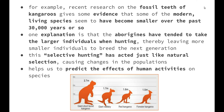For example, recent research on the fossil teeth of kangaroos gives some evidence that some modern living species seem to have become smaller over the past 30,000 years or so. One explanation is that the aborigines tended to take the larger individuals when hunting, thereby leaving more smaller individuals to breed the next generation.